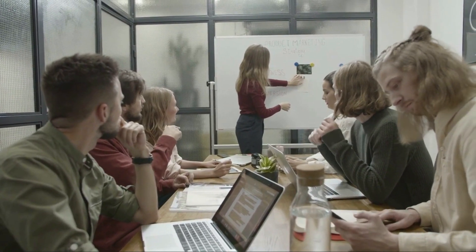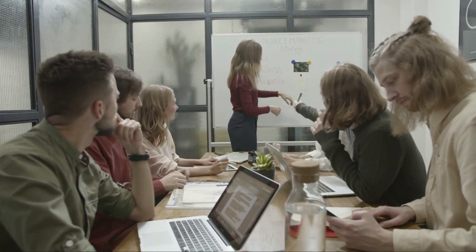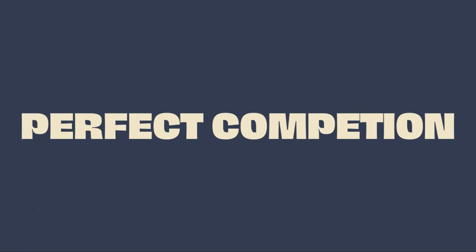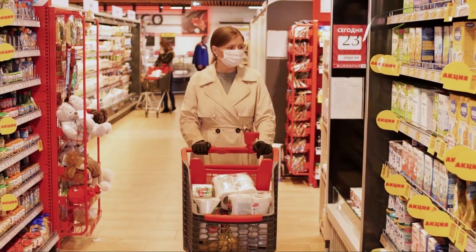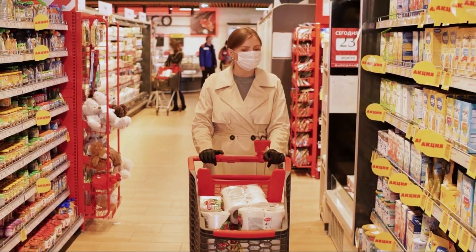Today we're going to talk about three types of market economy: perfect competition, monopoly, and oligopoly. When we say the market is in perfect competition, there are many businesses that sell the same product. In this type of market, the price is not determined by individual sellers and buyers but by demand and supply.